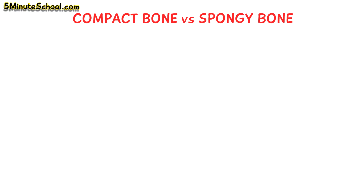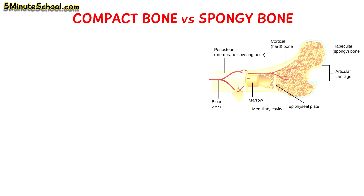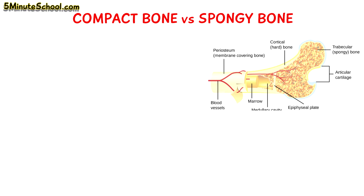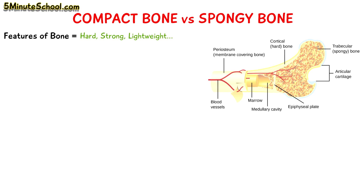In today's video we're going to be talking about the differences between two main types of bone tissue: compact bone, also known as cortical bone, and spongy bone, also known as trabecular bone. Bone has very unique properties, allowing it to be hard and strong while also being lightweight. Usually when looking at a unit of bone, the outer layer consists of compact bone and the internal tissue is made up of spongy bone.